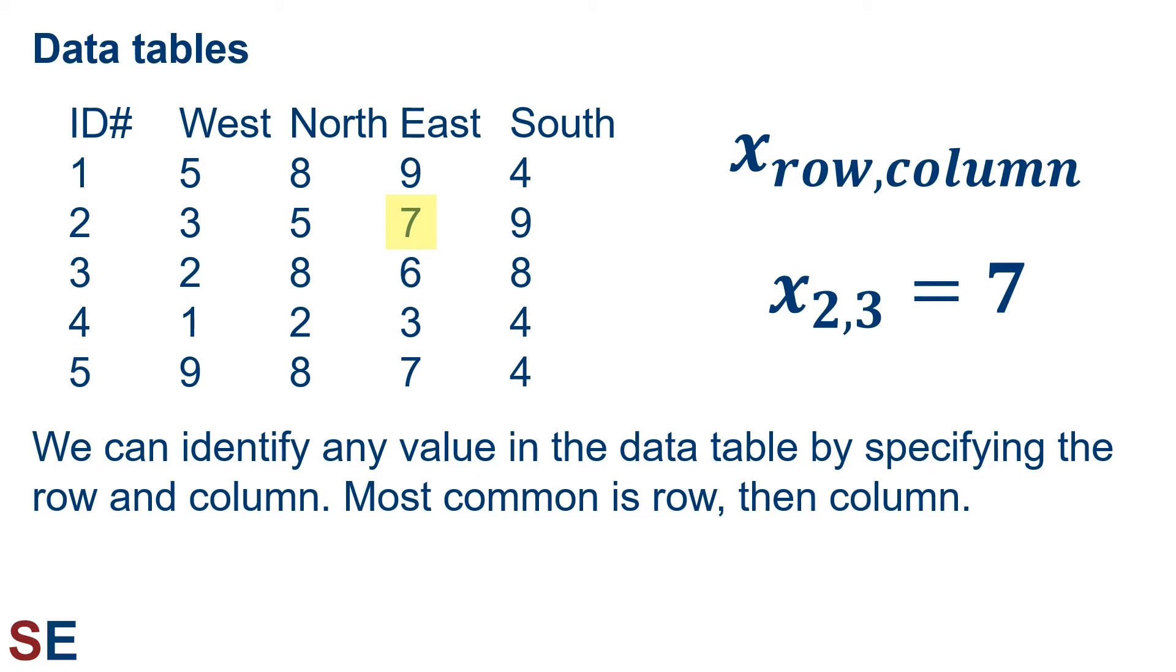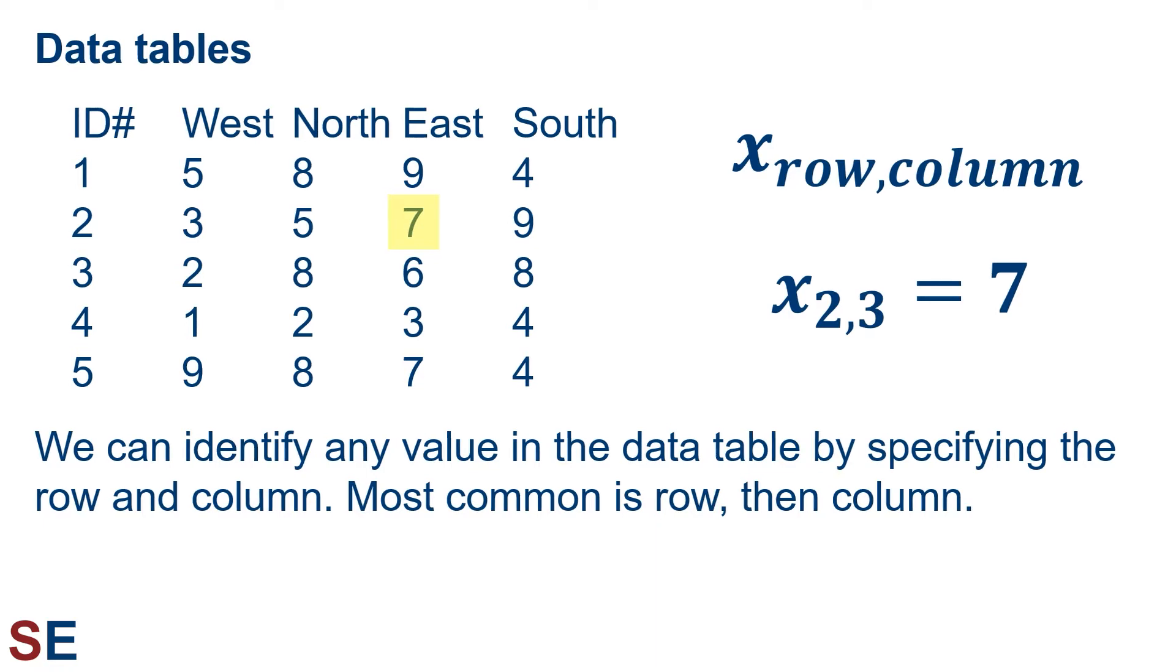We can therefore identify any value in the data table by specifying the row and column. The most common way to do this is to specify the row and then the column in a subscript next to the value x that indicates it's a variable value. The row and column are separated with a comma. For example, x subscript 2 comma 3 would be the value in the second row and third column. Remember that we're ignoring the values in the far left column because those are labels and not data values. If we go down 2 rows and over 3 columns, we get to the number 7.